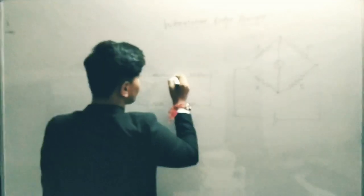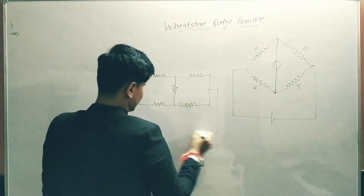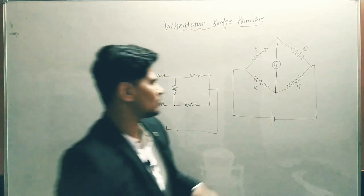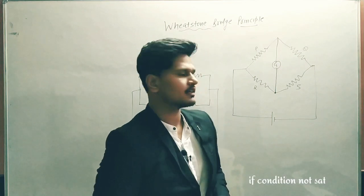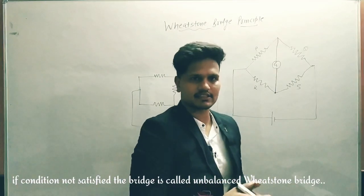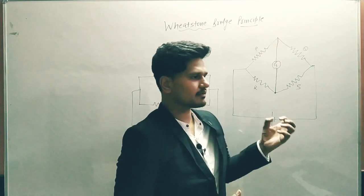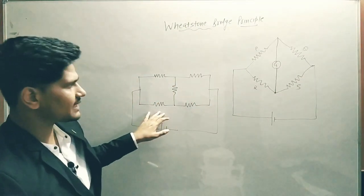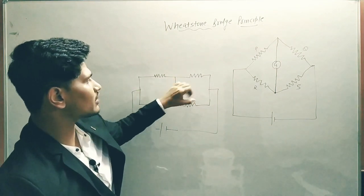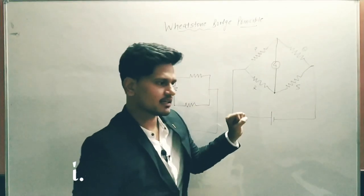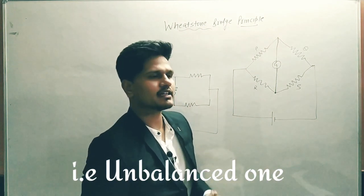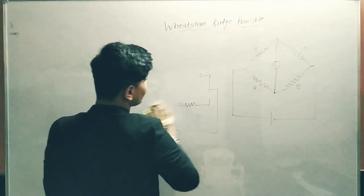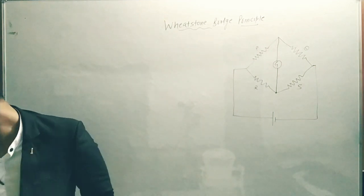You can see the Wheatstone Bridge drawn in different ways — sometimes as a diamond shape, sometimes in a flat form. However, we cannot call it a Wheatstone Bridge until a specific condition is satisfied. This is just the form of the bridge; it becomes a Wheatstone Bridge only when that condition is met. We are going to discuss that condition now.